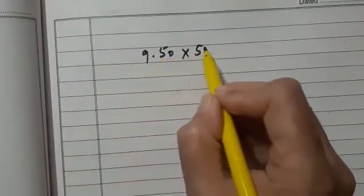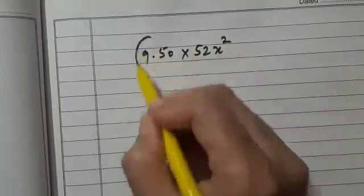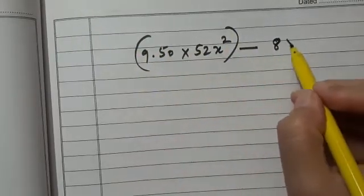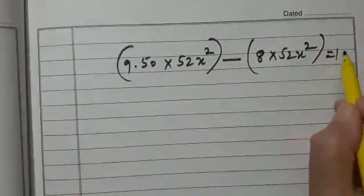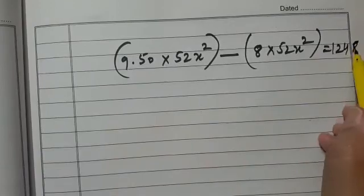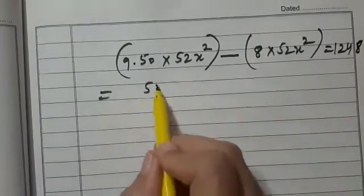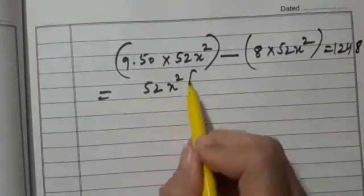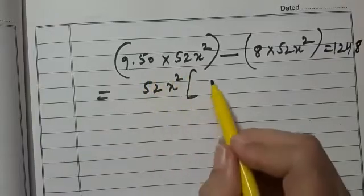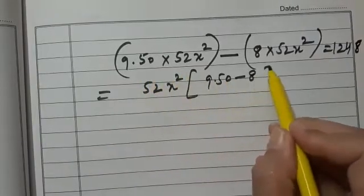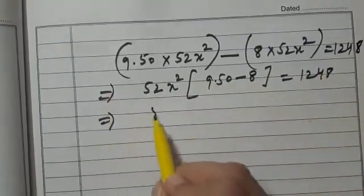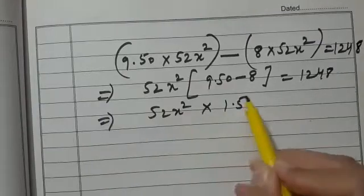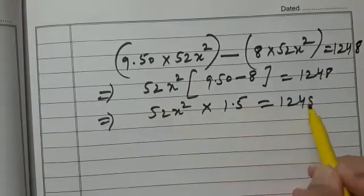The equation will be 9.50 × 52x² - 8 × 52x² = 1248. What is common? You can take 52x² common. So 52x²(9.50 - 8) = 1248. This implies 52x² × 1.5 = 1248.